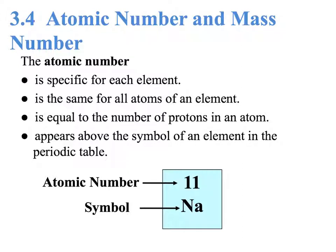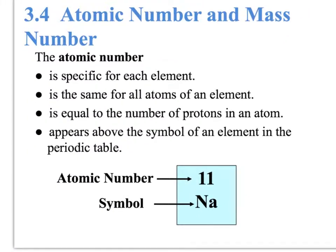When we represent a number in the periodic table, we are given the atomic number. The atomic number is specific for each element, and it's the same for all the atoms in that particular element. It's equal to the number of protons in the atom, and usually appears either above or in the corner in a periodic table. So when we see sodium, we know that the nucleus of sodium has 11 protons.